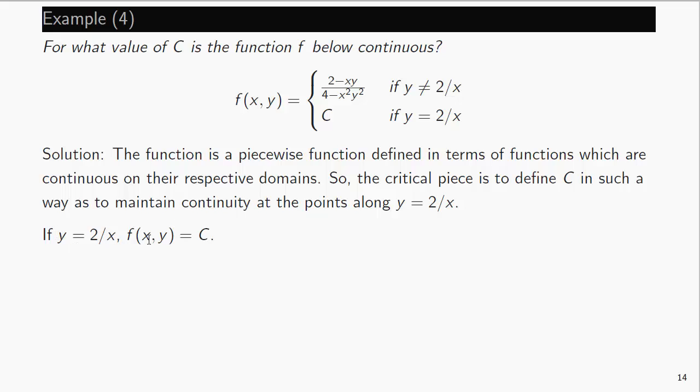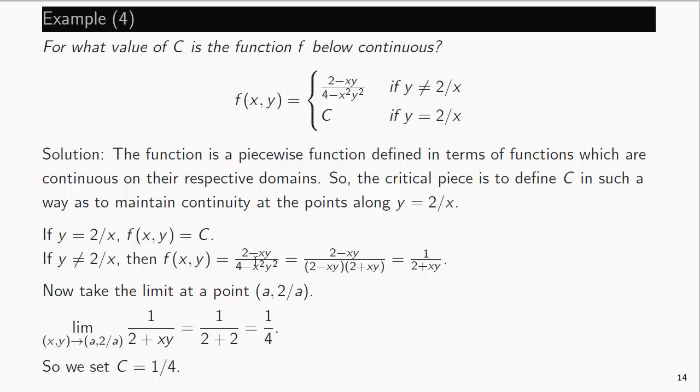So let's try it. If y equals 2 over x, the function value is some constant. If it's not 2 over x, then this is the function value. We can factor the denominator like so. And as long as y is not equal to 2 over x, we can cancel these out. We're not dividing by 0. Which means that this function is actually effectively equal to this on that portion of the domain. Now if you take the limit to some point where y is equal to 2 over x. So some point a comma 2 over a. (x,y) approaches that. That's equivalent to taking this here. And this is just a nice function. So we can plug in a and 2 over a. So we get a and 2 over a. That means 1 over 2 plus 2, which is 1 fourth. But of course, this chunk of the function, if we take the limit along this domain, we just get c. And so what we want is c to be 1 fourth. And then that will make it into a continuous function.